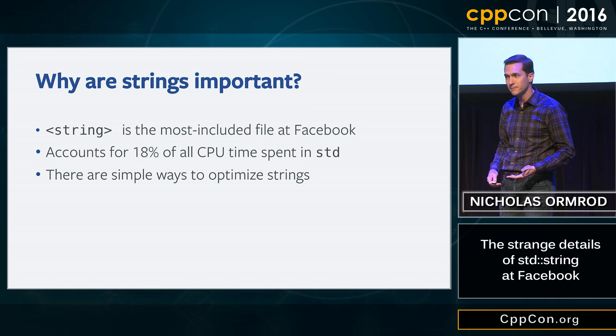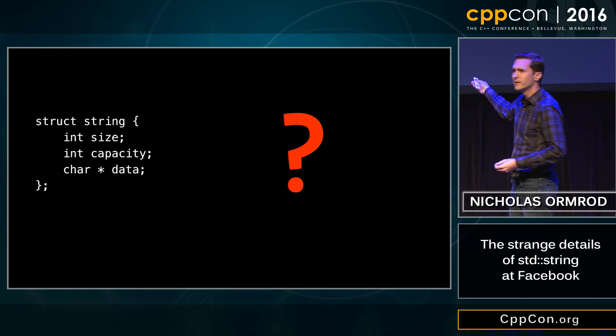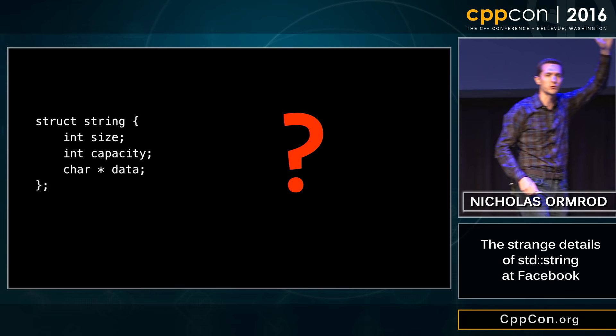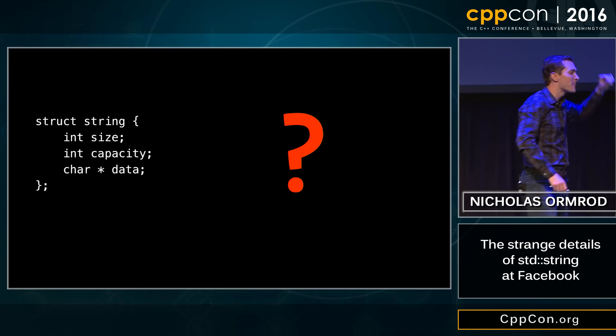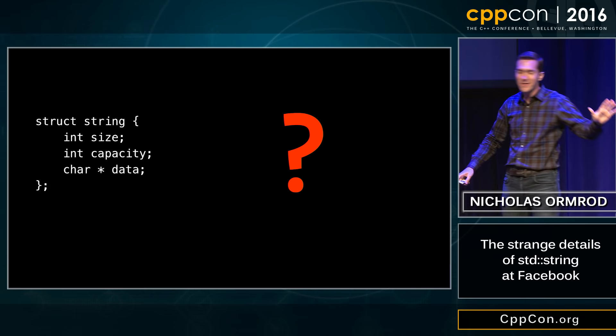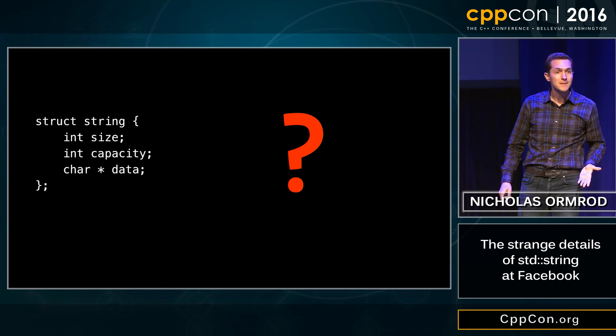Isn't this how you implement a string? Isn't string just a size, capacity, char star triple? I used to think that this is how strings worked — four years ago, before I knew anything about strings. Size, capacity, data — makes a lot of sense. And I thought this was true and I was happy.